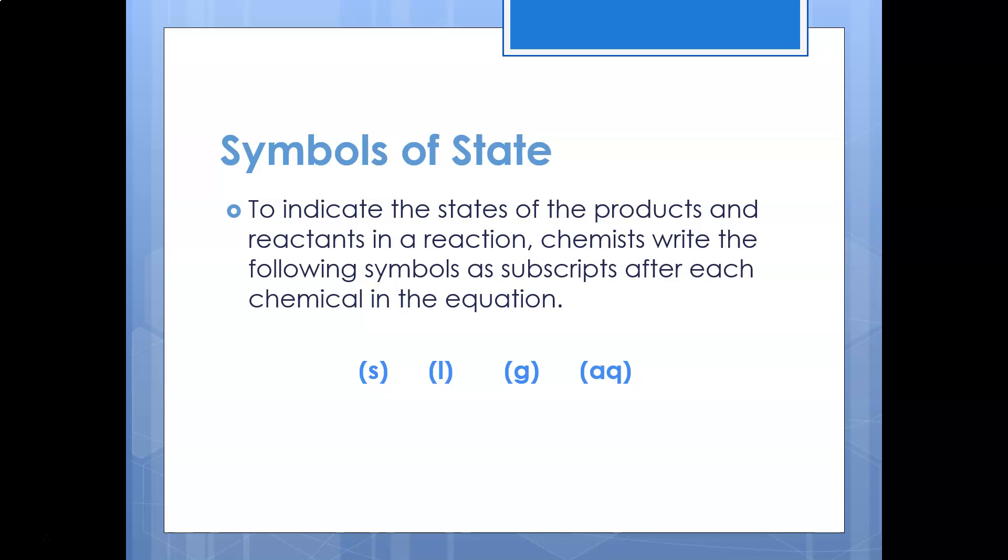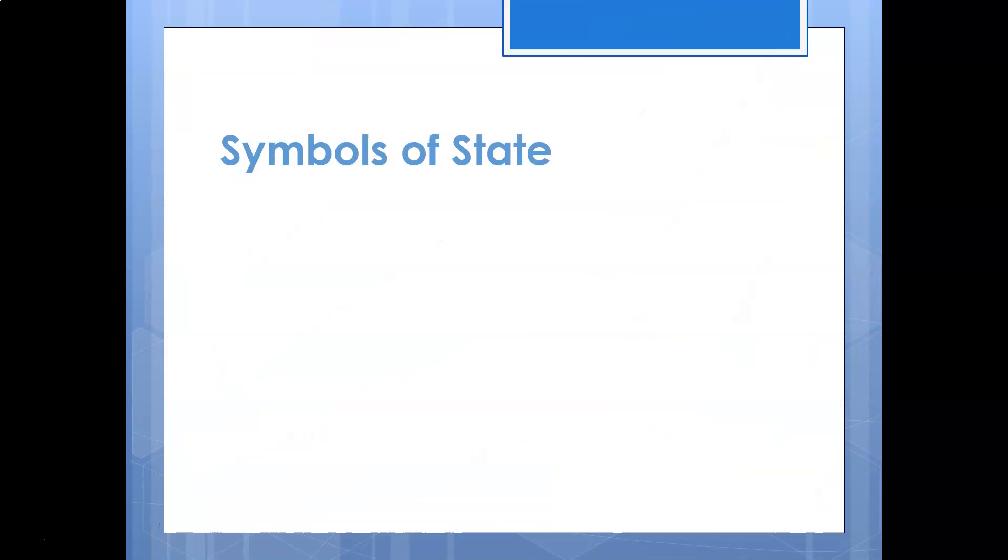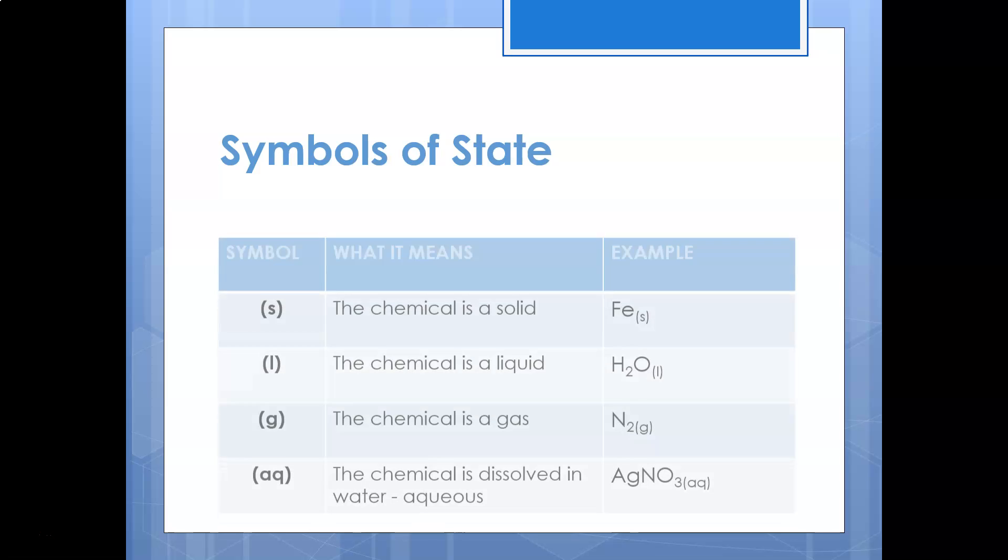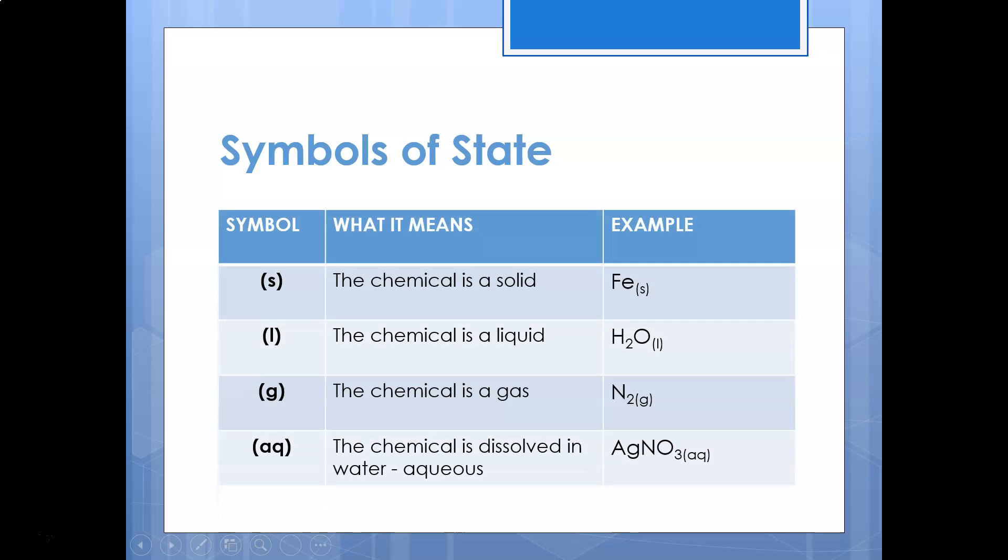If you ever see those next to any symbols in a chemical reaction that's what it means. So lowercase S means the reactant or the product is solid, lowercase L would mean the reactant or the product was liquid, just remembering that AQ means aqueous. That's how you would see it in that example column there.